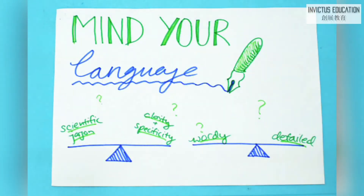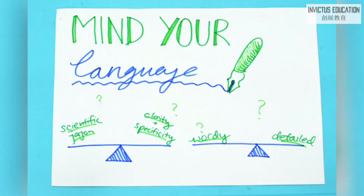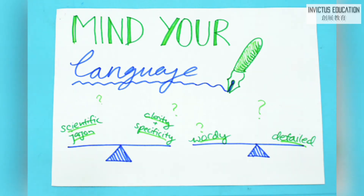Lastly, mind your language. Don't use too much scientific jargon, but be clear and specific. Don't be too wordy, but be detailed. It's a difficult balance to make, but here you'll need to use your intuition. Does your essay read smoothly? Would someone be able to read through all 4,000 words in one go and understand you?